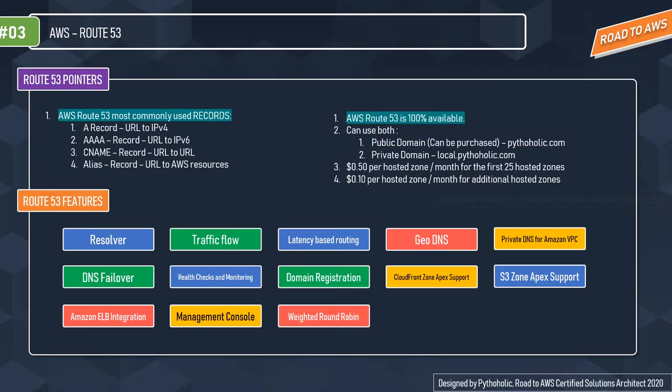Each record in a hosted zone must end with the name of the hosted zone. For example, the pytholic.com hosted zone can contain records for www.pytholic.com and apps.pytholic.com, but cannot contain records for a subdomain like www.pytholic.gov. The most commonly used Route 53 record types are: A record (URL to IPv4), AAAA record (URL to IPv6), CNAME (URL to URL mapping), and Alias records (URL to AWS resource mapping, such as ALB or S3).